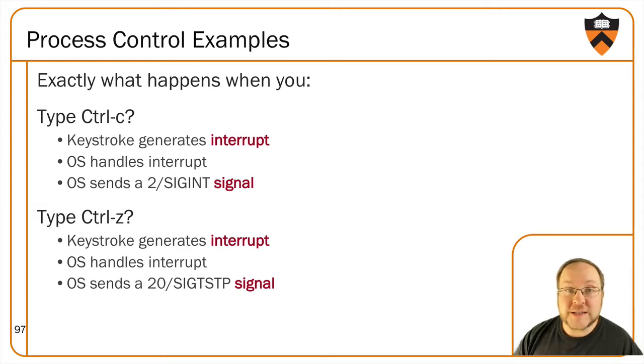The process, upon receipt of the signal, has either the default or custom mechanism for handling each signal. In the case of Ctrl-C, the notification is signal number 2, SIGINT, int here is interrupt, but that's sort of a misnomer as any of these signals is an interrupt. And the default behavior is to terminate the process. Kind of drastic.